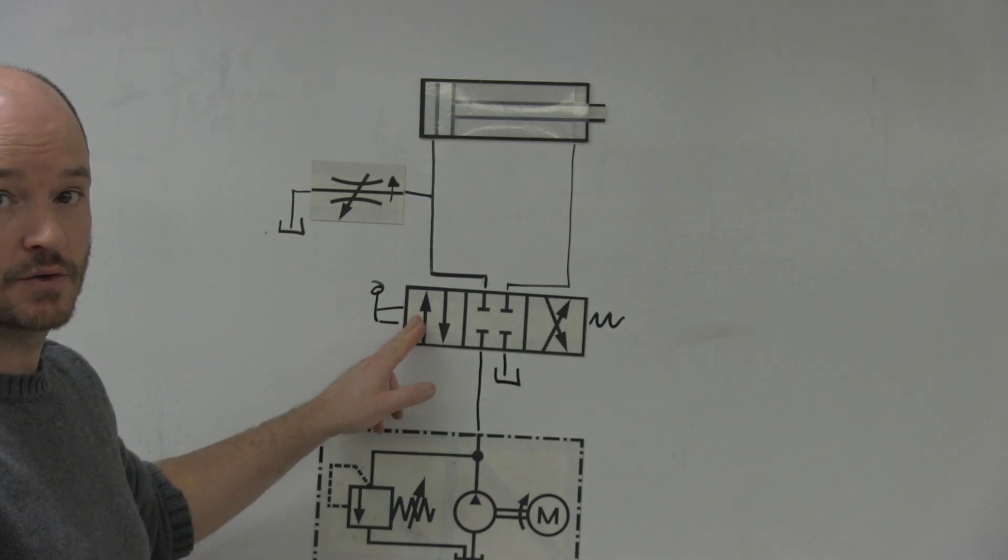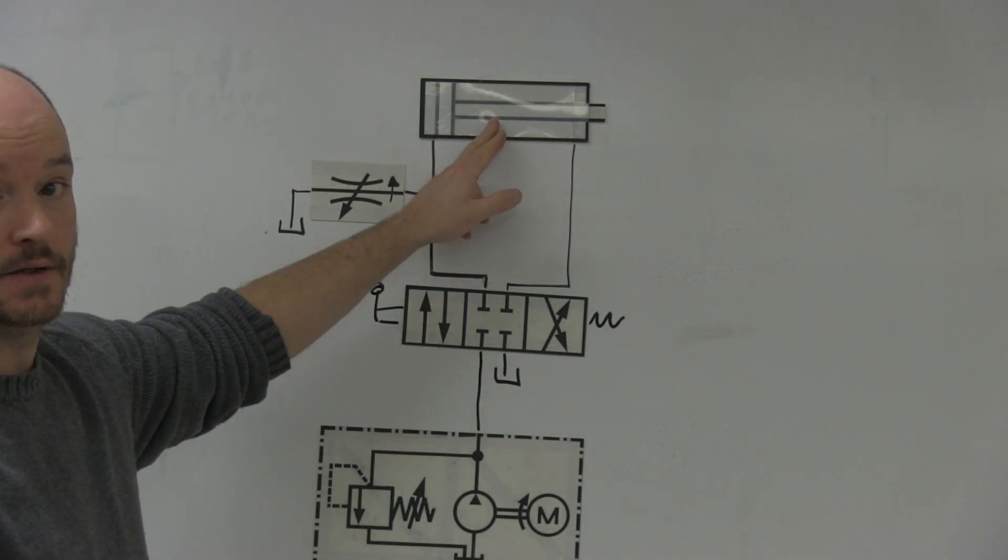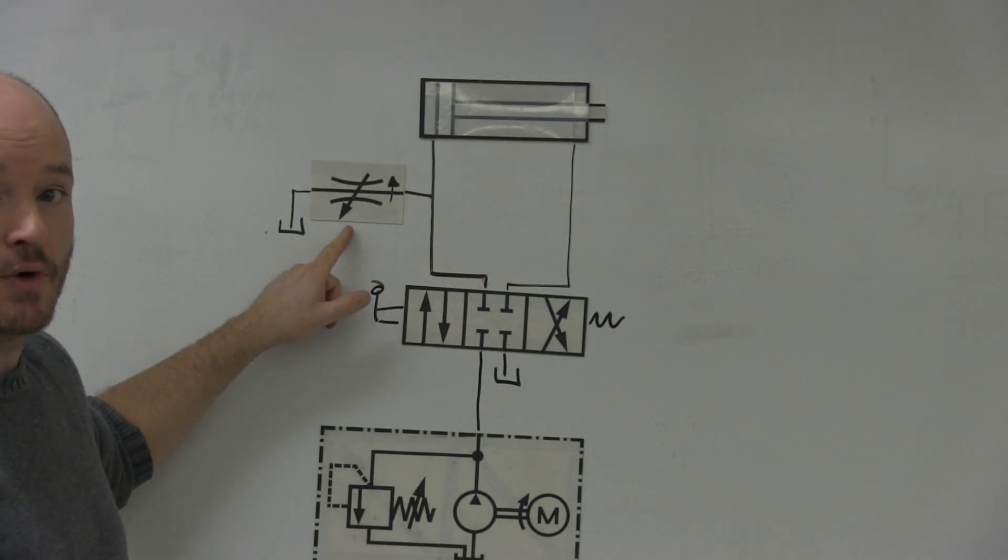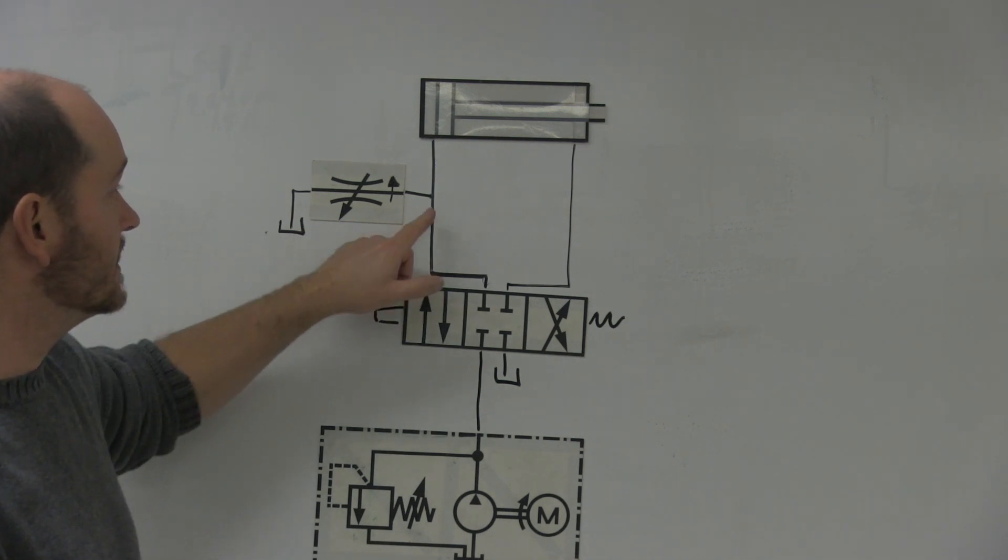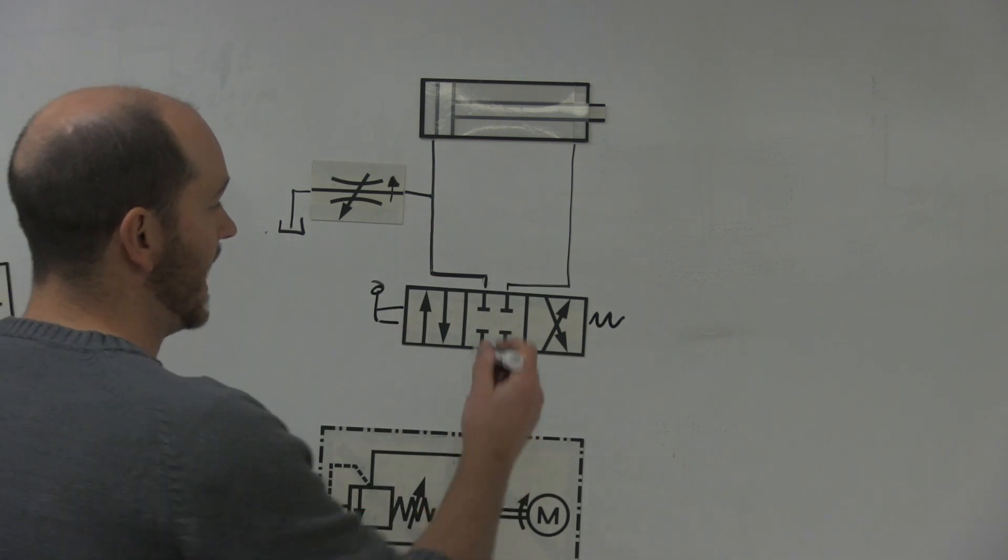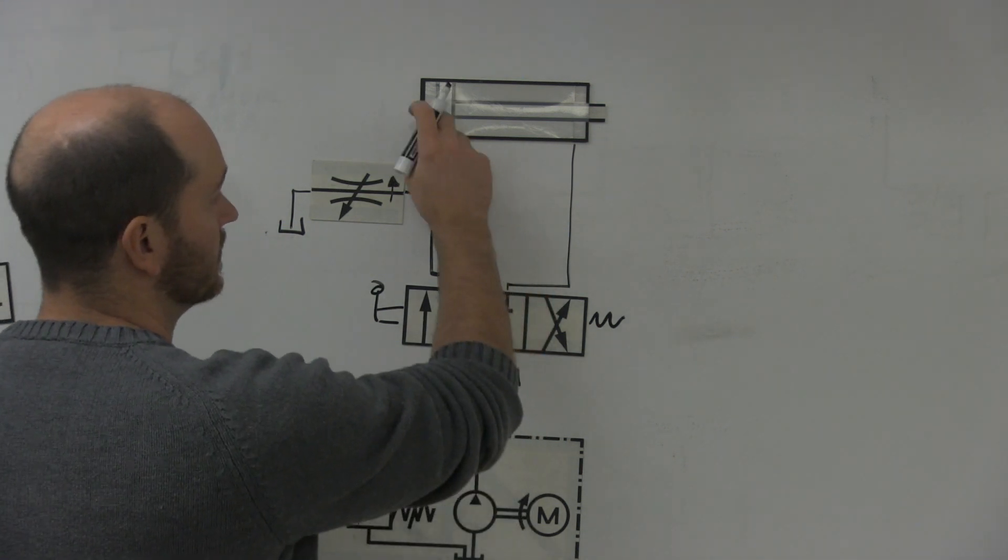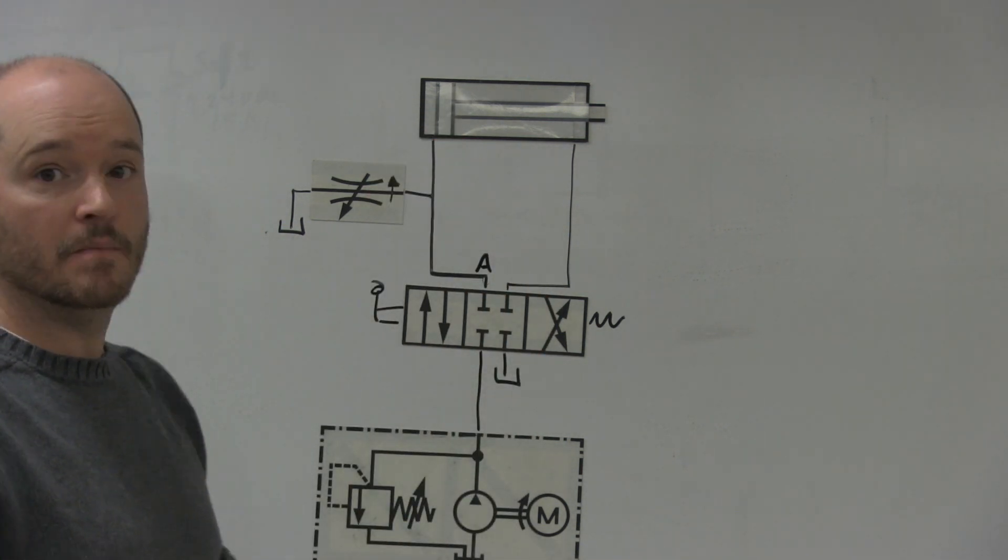Here I have a four-three directional control valve controlling a double acting cylinder. And here I have a pressure compensated flow control, or a pressure compensated needle valve. Depending on who you're reading, they can use both terms. It's going down to tank, which is teed off of my A line right here going to the blind end of my cylinder.